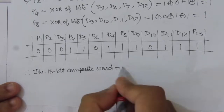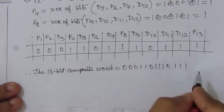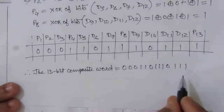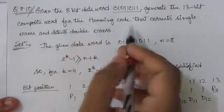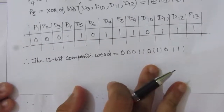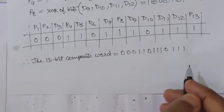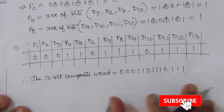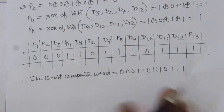Therefore the 13-bit composite word is: 0 0 0 1 1 0 1 1 1 0 1 1 1. This Hamming code word corrects single errors and detects double errors. The problem asked us to generate this 13-bit composite word, which we have done. Thank you for watching — if you have any questions please put them in the comment section below, and please like, share, and subscribe.